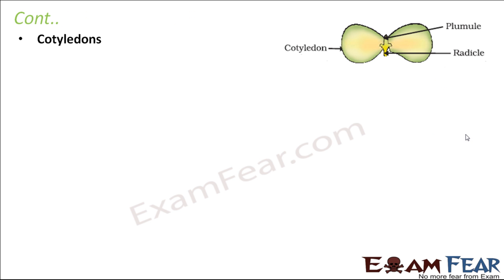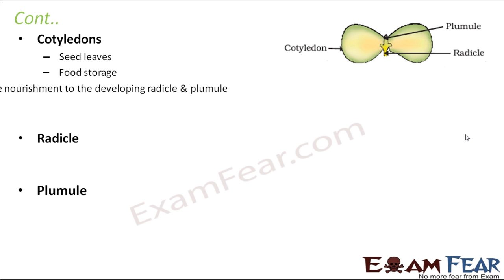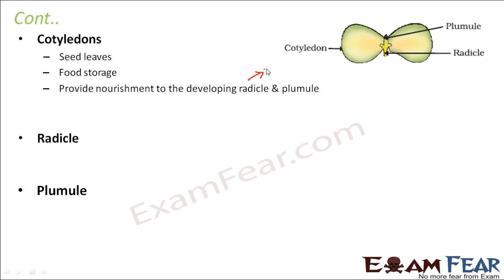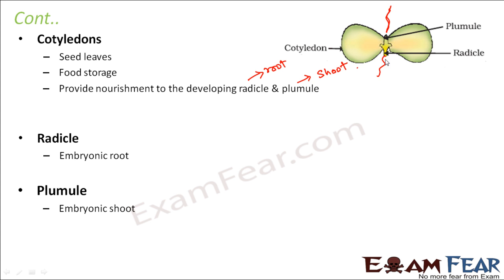Besides the outer structures, the dicot seed also has cotyledons, radicle, and plumule, because without these it will not be capable of giving rise to a new plant. Cotyledons are the seed leaves that help in food storage, providing nourishment to the developing radicle and plumule. The radicle is the embryonic root and gives rise to the entire root system, while the plumule is the embryonic shoot and gives rise to the entire shoot system.